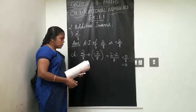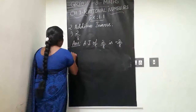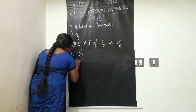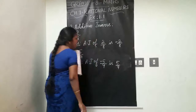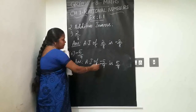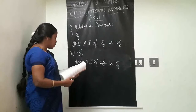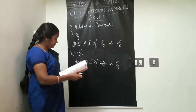For the second part, the question is minus 5/9. What is the additive inverse? The additive inverse of minus 5/9 is plus 5/9. Additive inverse means the negative number — minus becomes plus, plus becomes minus. For checking, if you add both, you will definitely get the answer zero. Additive inverse of 2/8 is minus 2/8, and additive inverse of minus 5/9 is plus 5/9.